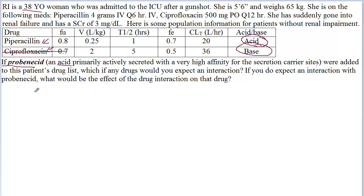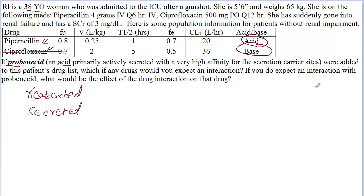The first thing is we have to find out whether piperacillin is predominantly reabsorbed or predominantly secreted. So how do you know that? Let's do the calculations. So what is the total clearance, renal clearance, and what is the glomerular filtration rate and the secretion rate?